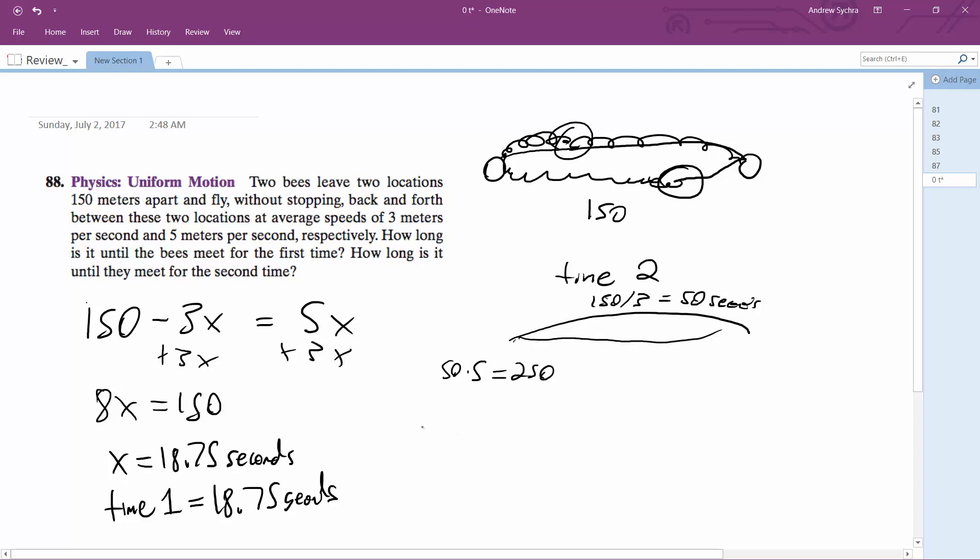So what we get here is 250 meters. So he's already flown once, 150, and then 250. So that's two-thirds of the trip. So it's 100 plus 5X. And this is going to be equal to 150 minus 3X.